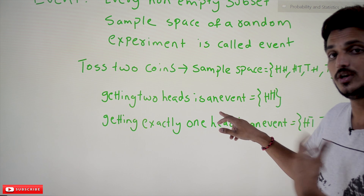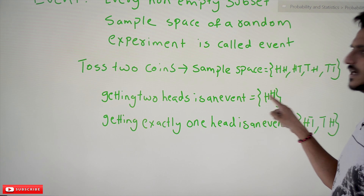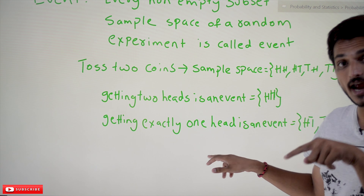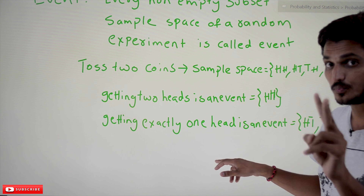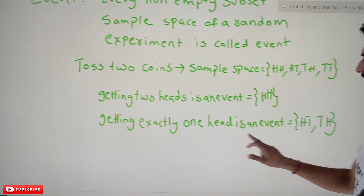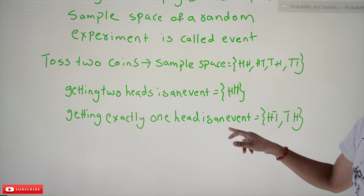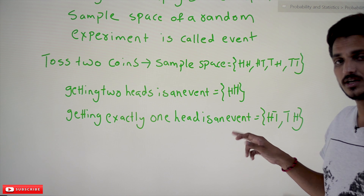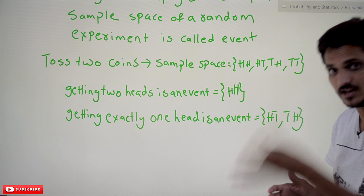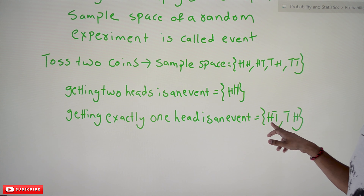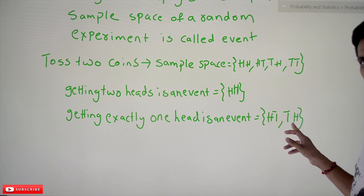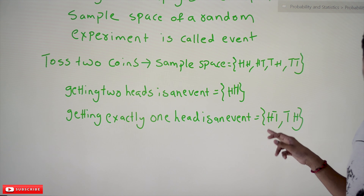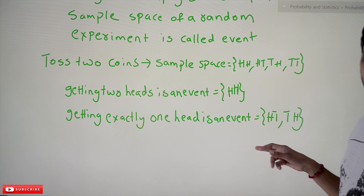One more event — getting exactly one head. Exactly one head: there are two possibilities, and that is an event. What are the possibilities showing exactly one head? Either the first coin shows head and the second shows tail, or the first shows tail and the second shows head. These are the possible outcomes for that required event.